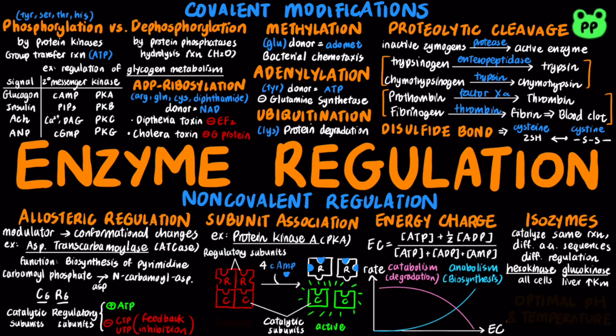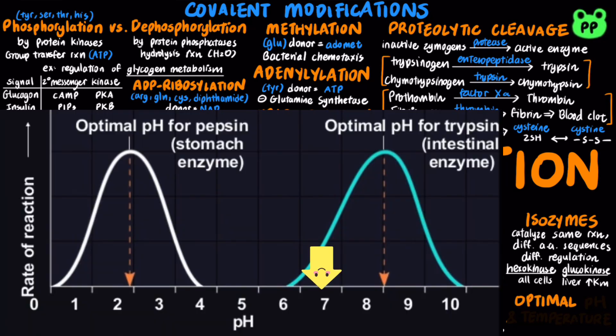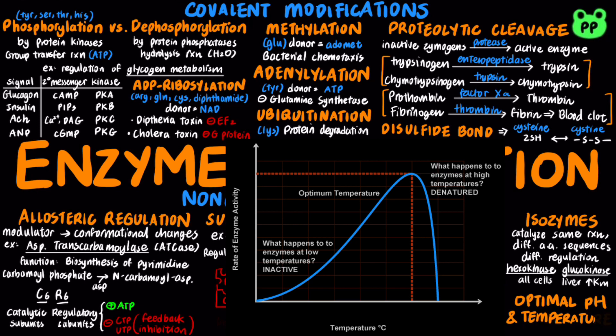Lastly, different enzymes have different optimal temperatures and pH. Most enzymes are most active at the physiological pH of about 7.4. However, pepsin found in the stomach is optimal at lower pH, and trypsin found in the intestine is optimal at higher pH. Most enzymes are optimal at body temperature and would denature at higher temperatures. That's why it's important for our body to maintain homeostatic temperature.